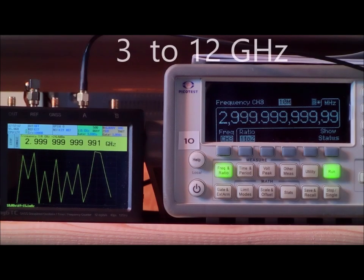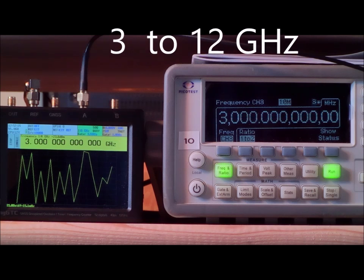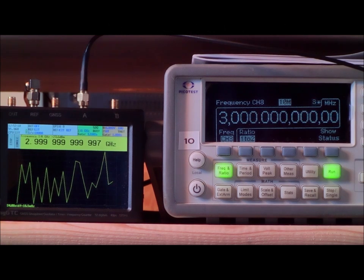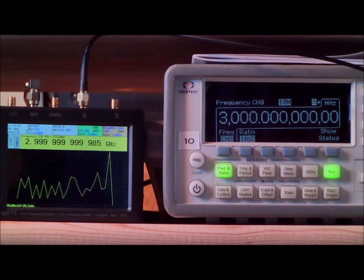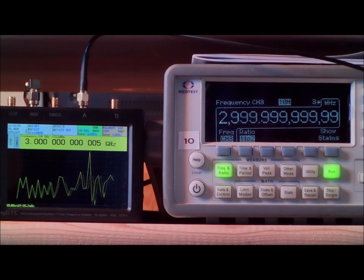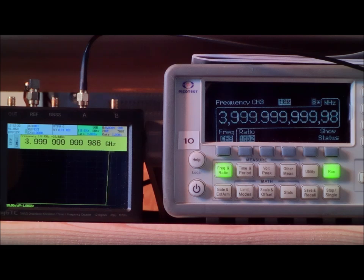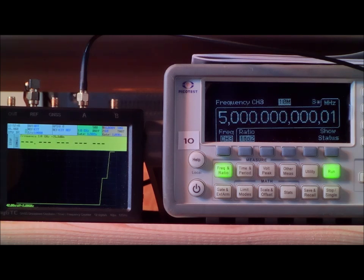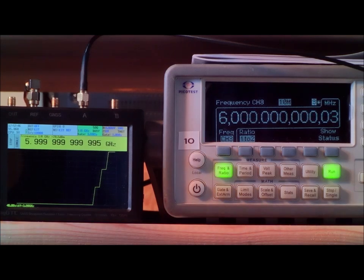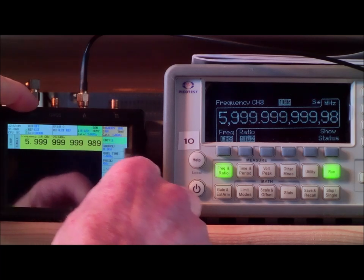With the signal generator set to minus 10 dBm output power, I am now going to increase its output frequency in steps of 1 GHz and we can see when one of the counters is not able to measure the frequency. Let's go to 4, no problem for both counters. Let's go to 5, no problem. Let's go to 6, no problem. I have to switch the TinyGTC to its other prescaler.